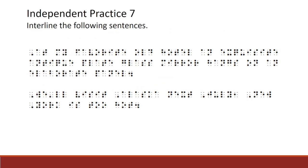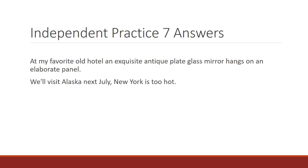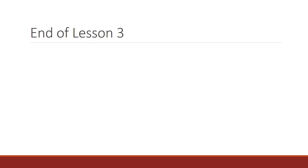Here is the last set of independent practices. It's independent practice 7. Interline the following sentences that are written in braille font. When you have finished, move to the next slide for the answers to independent practice 7. Here are the answers. At my favorite old hotel, an exquisite antique plate glass mirror hangs on an elaborate panel, period. And the last sentence: We'll visit Alaska next July, comma, New York is too hot, period. Congratulations. You have now finished lesson 3. When you feel confident with the braille you have learned to this point, I'll see you in lesson 4.